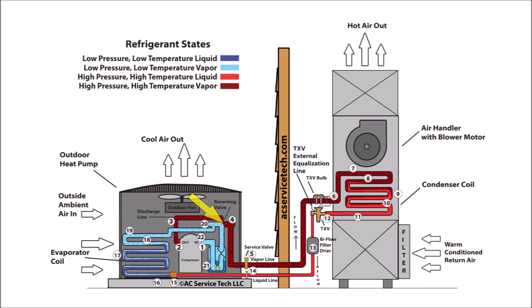This superheated vapor travels through the reversing valve at step four, and it heads towards the vapor service valve. At step five, we have the high pressure, high temperature, superheated vapor traveling through the vapor service valve and heading into the indoor coil. Since we're in heat mode, it's going to be referred to as the indoor condenser coil.